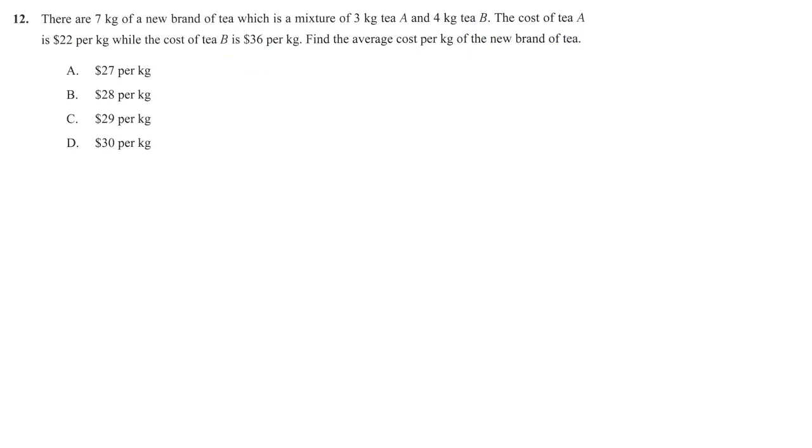For simplicity, I'll let the new brand be called C. The per kg cost of C is just the total cost to form C divided by the total weight.